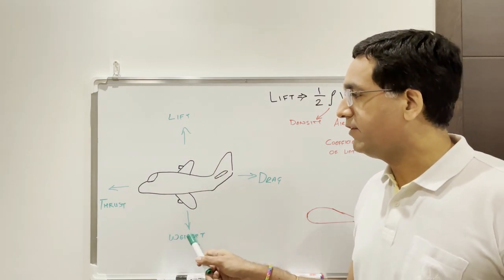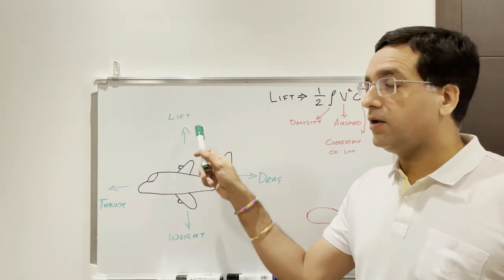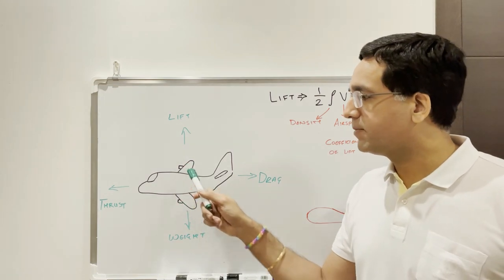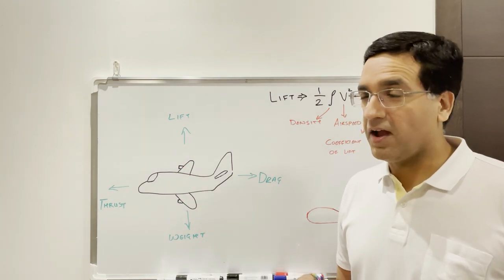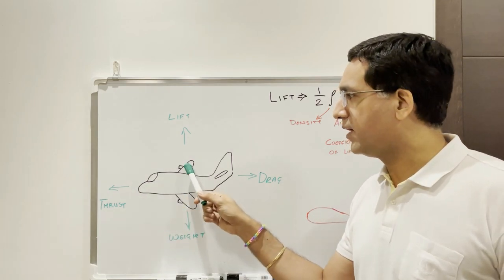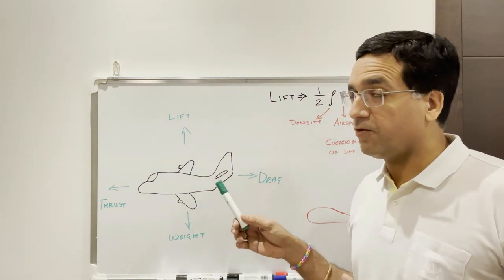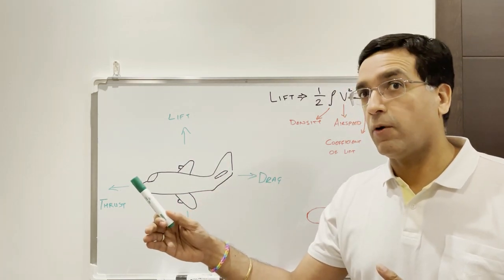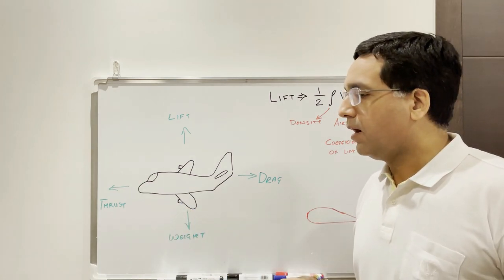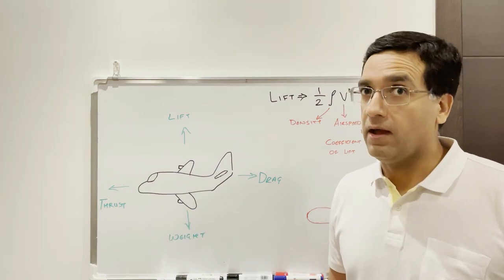So we've got lift, weight, thrust and drag. Lift, which is generated by the wings, weight being the weight of the aircraft. Thrust is the forward force generated by the engines, and we have drag, which is the resistance to motion. This is the resistance posed by the air around the aircraft.